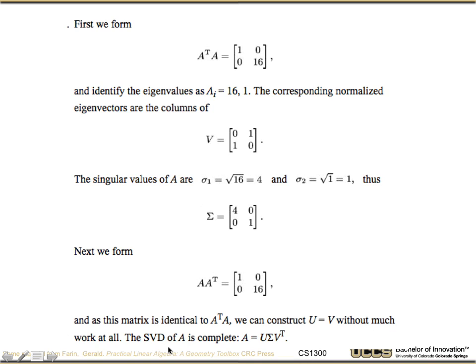And then we just have to remember when we put them all together that A is equal to U sigma V transpose, not V at the end, so it's V transpose.